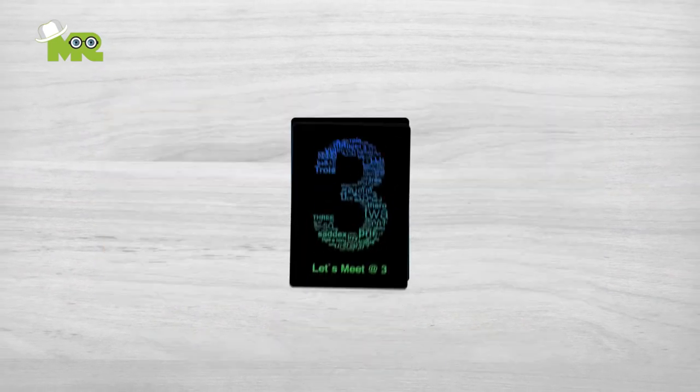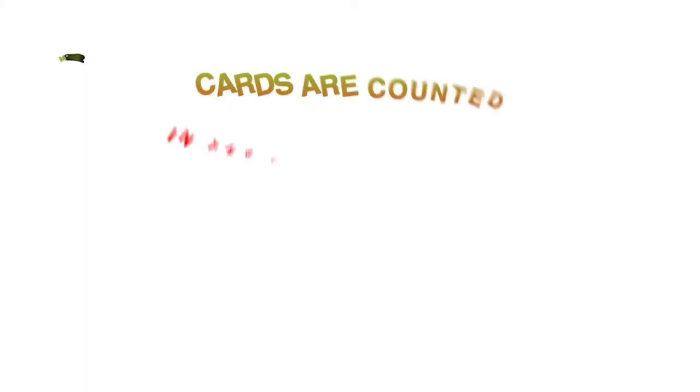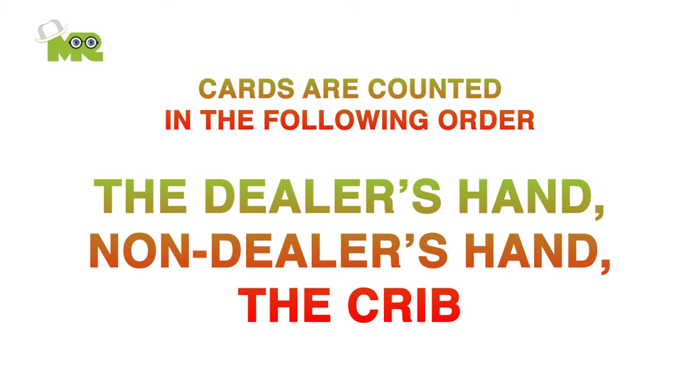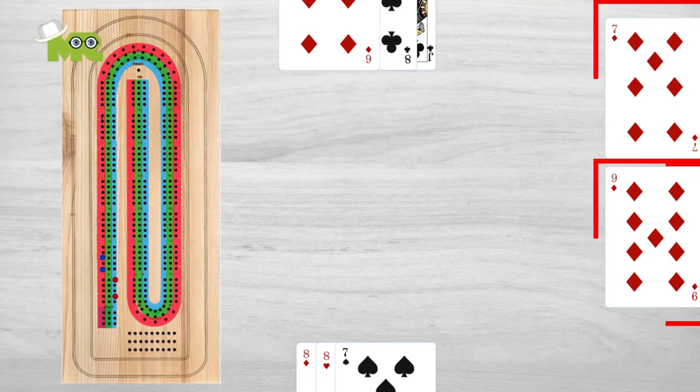At the end of the rounds, all the played cards are assessed for pegging. The points of cards are counted in the following order: the dealer's hand, non-dealer's hand, then the crib. The starter card is assumed to be part of both players' hands while counting scores.